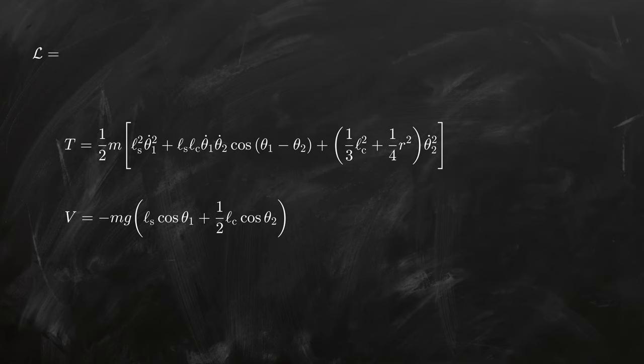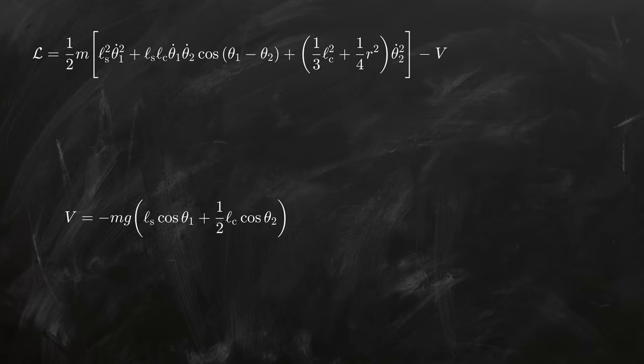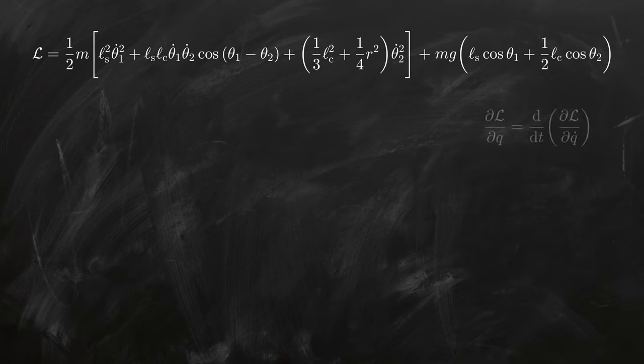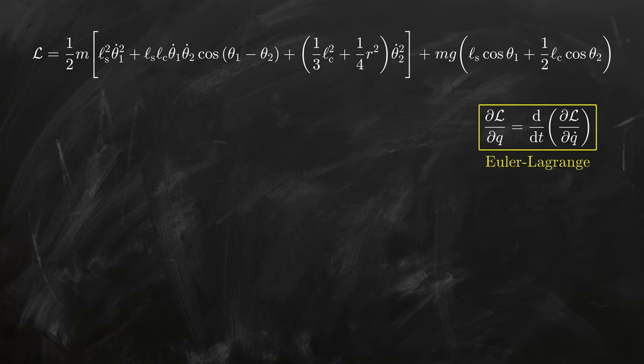This allows us to write down the Lagrangian in terms of our coordinates. It is now time to apply the Euler-Lagrange equations for theta 1 and 2. I'll show the general form on the right in case you've forgotten what it looks like.